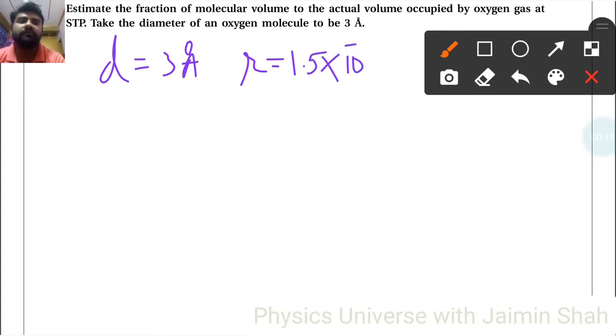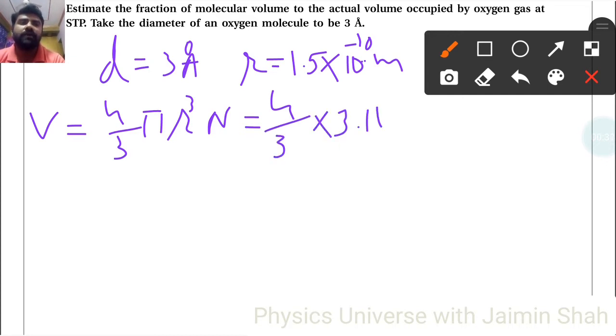The volume formula is V = 4/3 π r³ × N. So that's 4/3 × 3.14 times r³. Now converting the radius to centimeters,